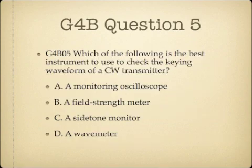Question 5. Which of the following is the best instrument to use to check the keying waveform of a CW transmitter? A, a monitoring oscilloscope. B, a field strength meter. C, a side tone monitor. Or D, a wave meter.